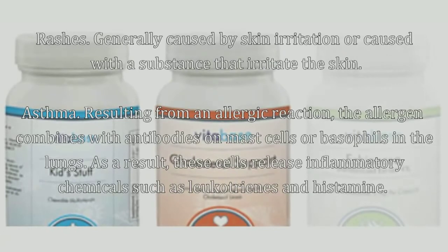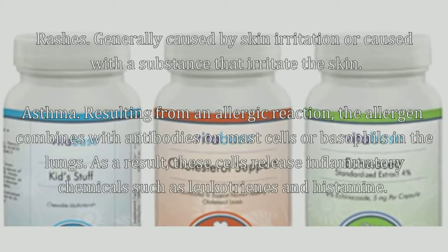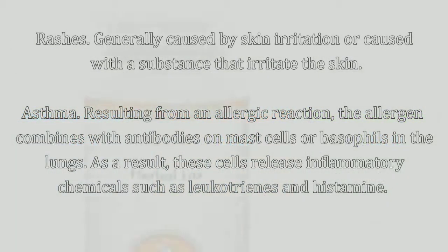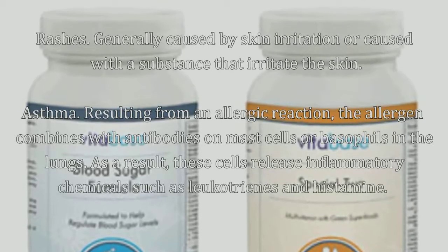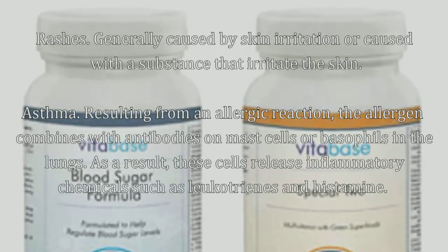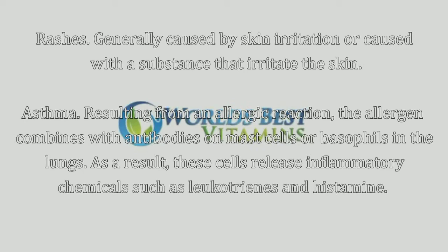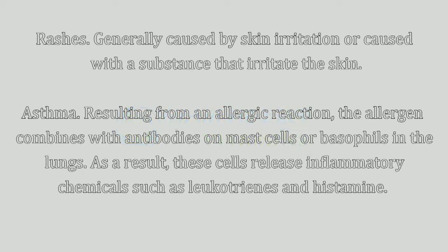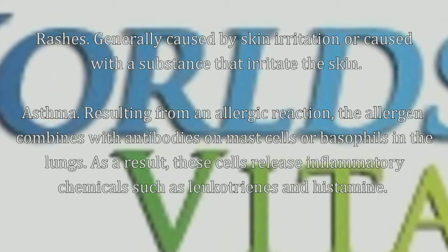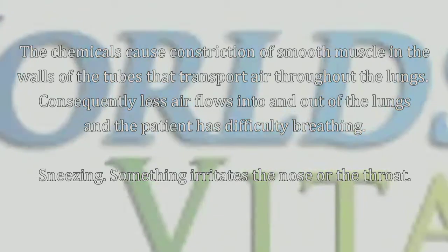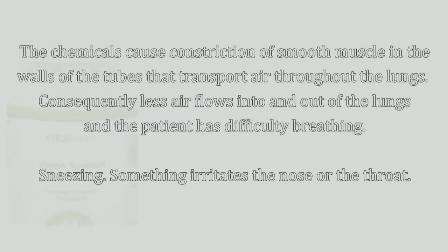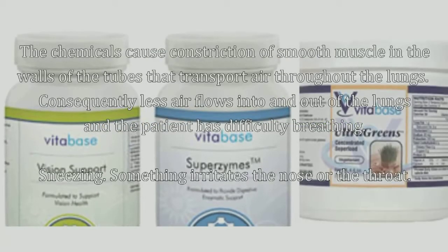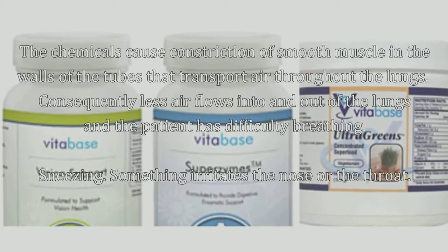Asthma resulting from an allergic reaction: the allergen combines with antibodies on mast cells or basophils in the lungs. As a result, these cells release inflammatory chemicals such as leukotrienes and histamine. These chemicals cause constriction of smooth muscle in the walls of the tubes that transport air throughout the lungs.